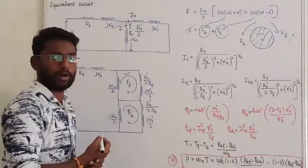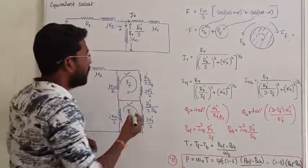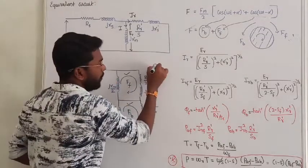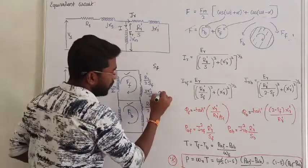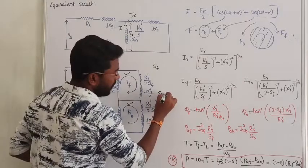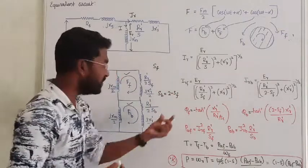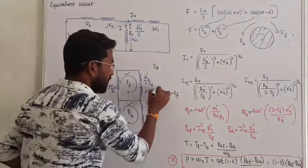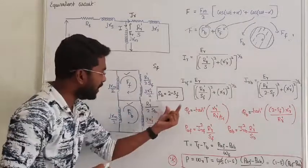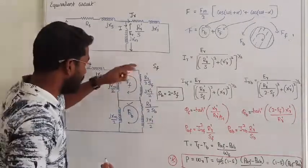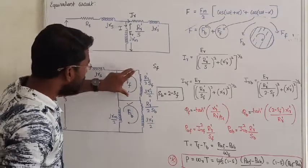One is my forward MMF, another one is backward MMF. Forward MMF has a corresponding forward slip. Backward MMF has a corresponding backward slip. Backward slip is equal to 2 minus S_F, where S_F is the forward slip. We saw this relation between backward slip and forward slip. Now, the circuit will represent each MMF separately - the first circuit is responsible for forward slip.